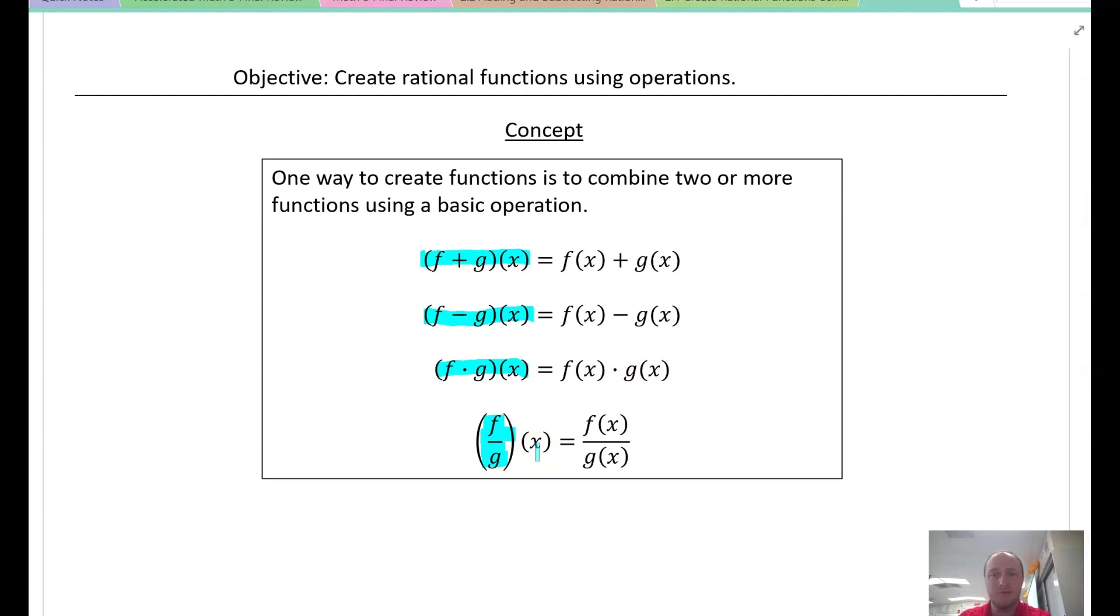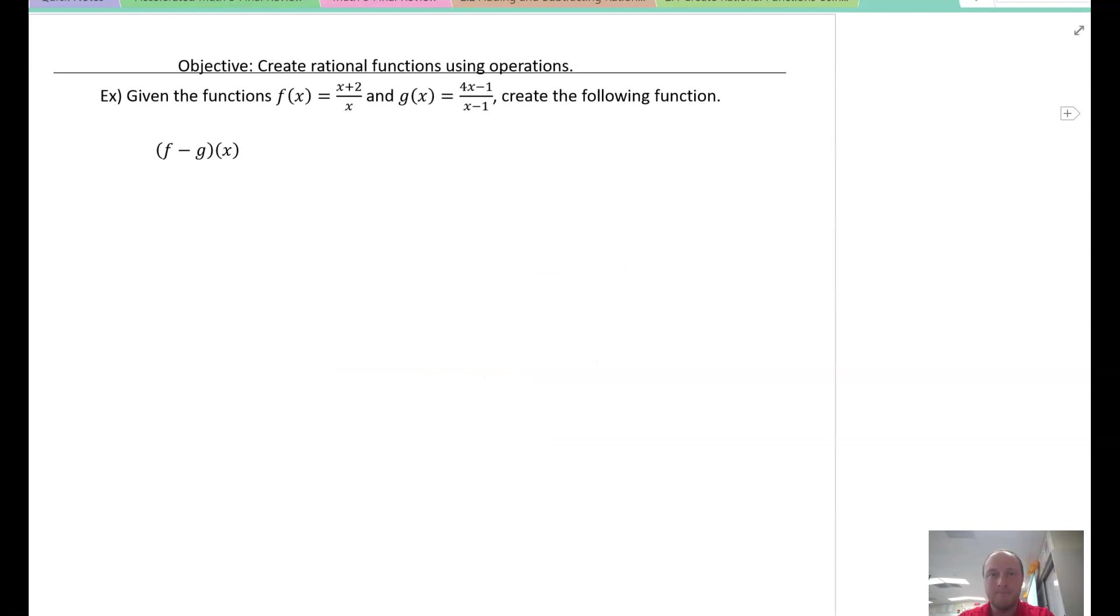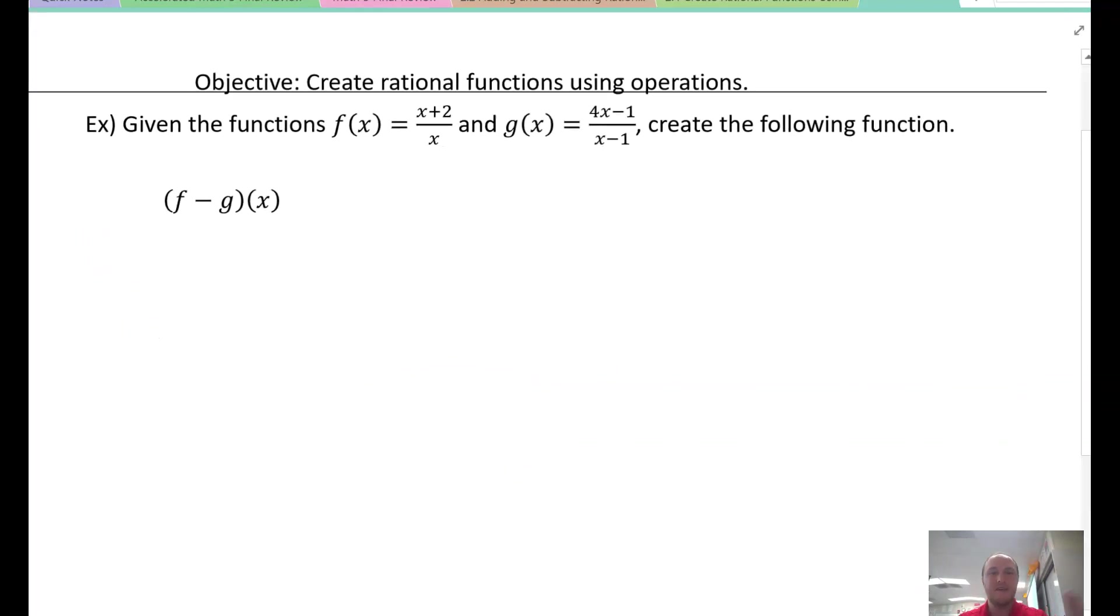I'm going to split this into two separate videos. I'm just going to start with the first two, which is addition and subtraction. Here's our first example. Given the functions f(x) and g(x), create the following function: f minus g of x. We have f(x) minus g(x). I'm going to substitute. Here's f(x): x plus 2 over x, minus g(x), which is x minus 1 over x minus 1.